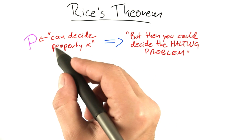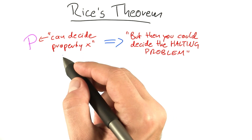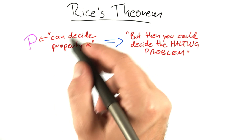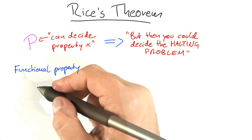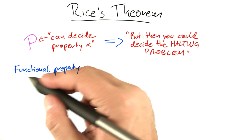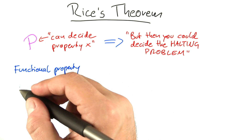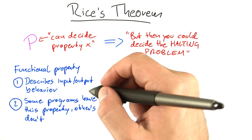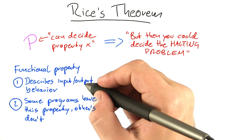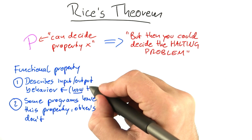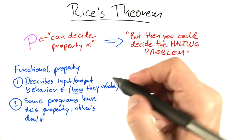We must be a little bit more formal about this 'property' thing. Henry Rice used the notion of a functional property. What is a functional property? It sounds very complicated, but it's actually a very simple definition. Any functional property has two properties. First, it describes how the output relates to the input — this is what we mean by behavior, and that is important: how they relate to each other.